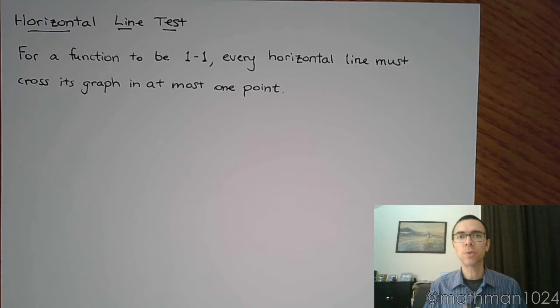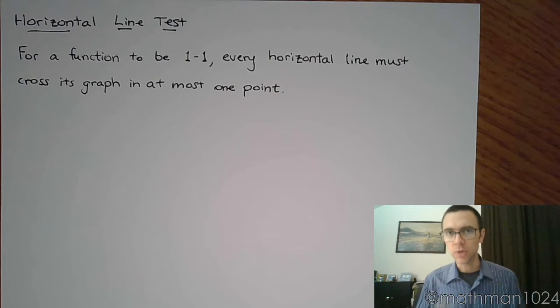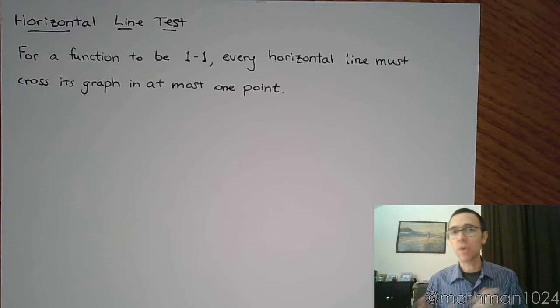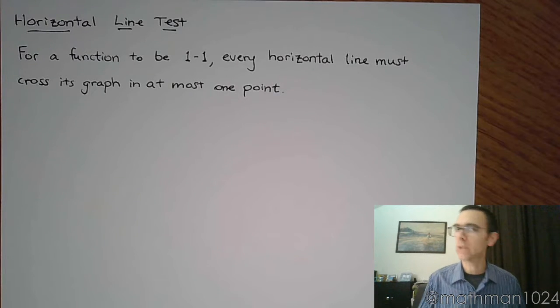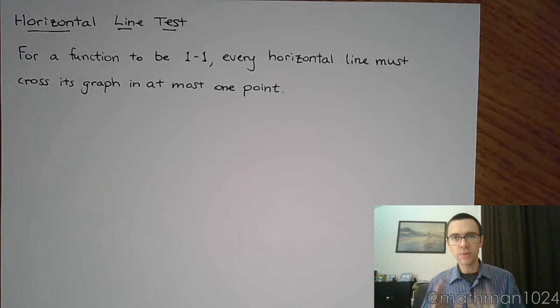There's a simple test for determining whether or not a graph represents a one-to-one function. The assumption here is that we've already determined that the graph represents a function by passing the vertical line test. As long as we've established that we have a function, you can then apply the horizontal line test. Just run a horizontal line down the graph, and as long as the horizontal lines only hit the graph at most one point, then that graph is going to be a one-to-one function.